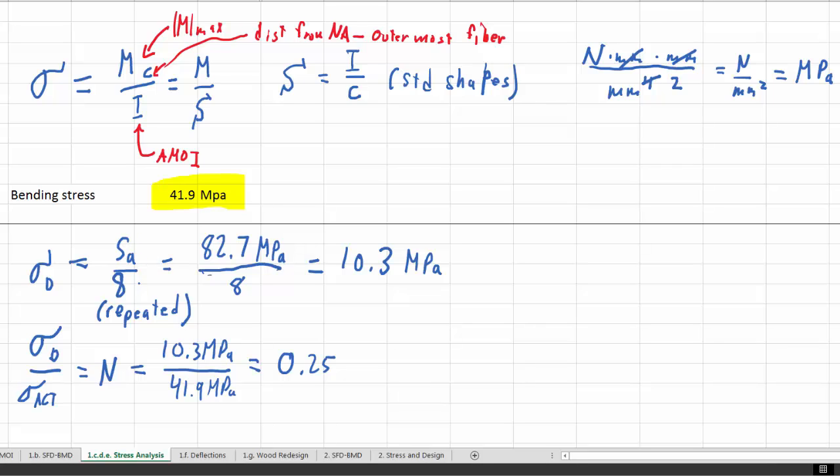And normally we would design for ultimate strength divided by 2. So for a repeated load, n should be 4. We should end up with something more like 4 over here or 8, not 0.25. So this is definitely not a good choice of material or it's not a good choice of a cross-section or perhaps both. So we're just going to show this comparison here, 41.9 megapascals and say, not a good choice.